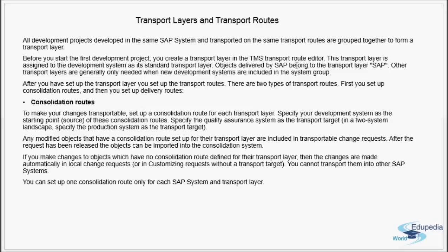Objects delivered by SAP belong to the transport layer 'SAP.' Other transport layers are generally only needed when new development systems are included in the system group. SAP uses its default transport layer 'SAP,' and all other custom transport layers — for example from development to QA — use a different particular transport layer. If you create one more development system, you will have to create one more transport layer. After setting up the transport layer, you set up the transport routes.